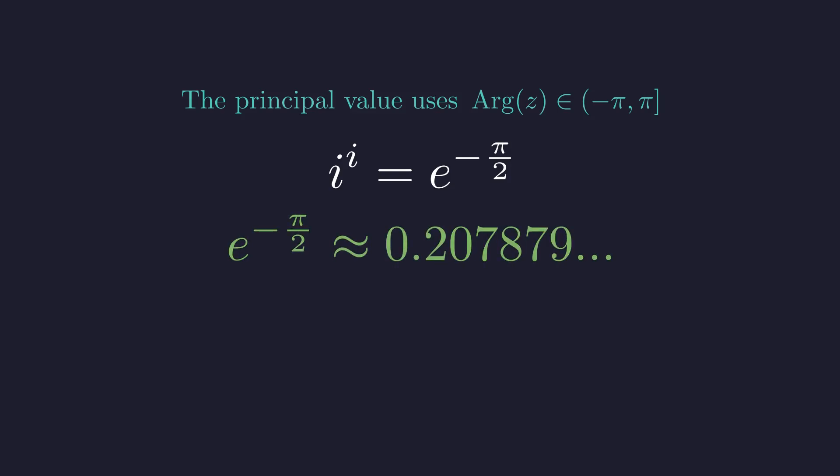So the principal value is e to the power of negative pi over 2. Which, numerically, is approximately 0.207879.